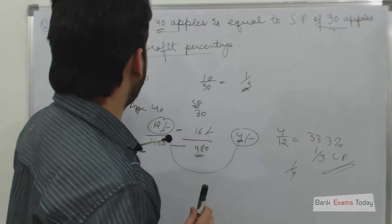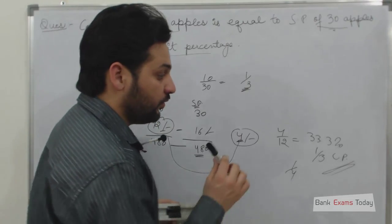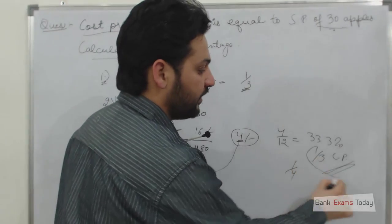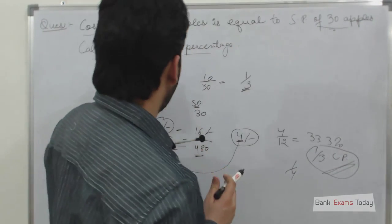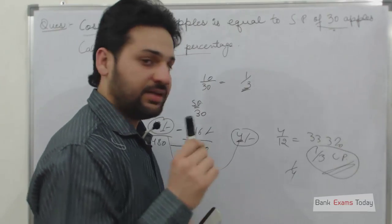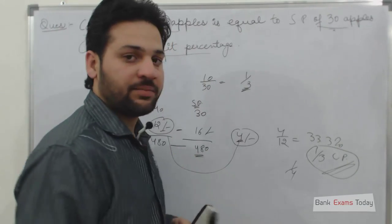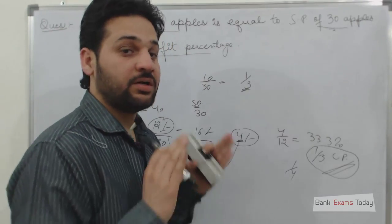In case nothing is provided that what kind of profit percentage you need to find, you need to find the profit percentage on cost price. If it is specifically, explicitly explained that you need to calculate the profit on selling price, then only you need to calculate the profit on selling price. By default, you need to calculate the profit on cost price.